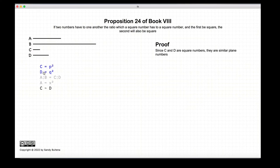Now, since C and D are square numbers, they are similar plane numbers, because, remember, it is the ratio of the side. So, P to P is equal to Q to Q. So, C and D are similar numbers.